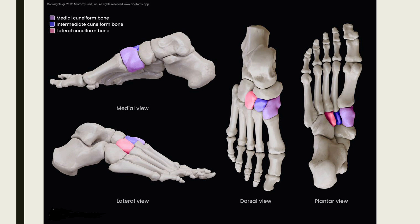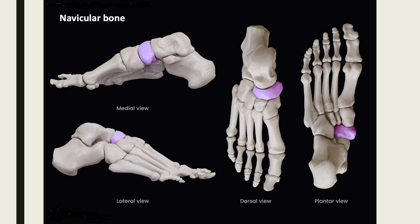The cuneiform bone is located at the distal row, articulating with the metatarsal bones and navicular bone. It consists of three bones: the medial, intermediate, and lateral cuneiform bones. The navicular bone is interposed between the talus and three cuneiform bones. The cuboid bone is located at the lateral side of the distal row and articulates with the calcaneus to the fourth and fifth metatarsals.